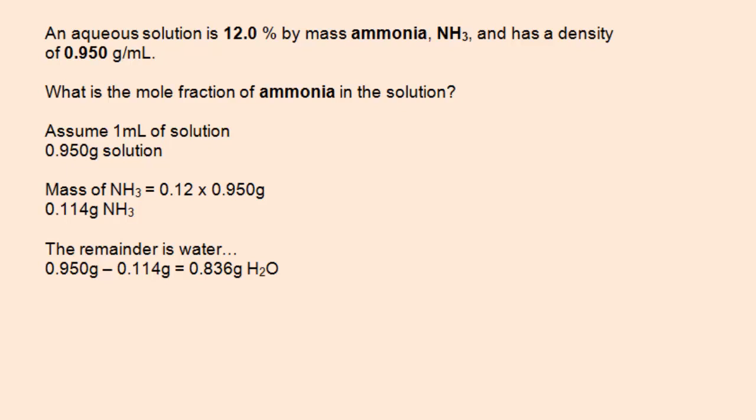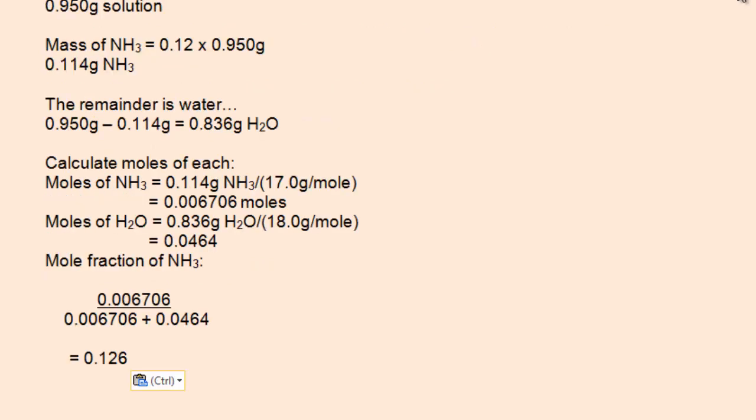The remainder of the mass is that of water. So 0.95 grams total of solution, subtract 0.114 grams of ammonia, gives 0.836 grams of water. And at this point, we could calculate the moles of each, and finally the mole fraction of ammonia.